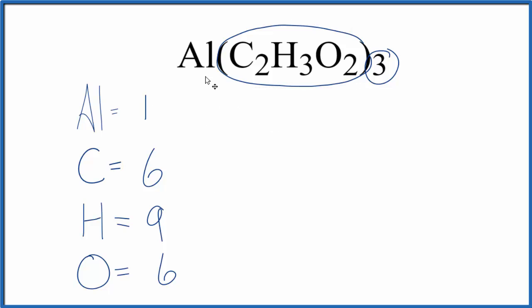So if we want to know the total number of atoms in aluminum acetate, we'll just add all of these up. One plus six is seven, plus nine, that's 16, plus six, 22 total atoms for aluminum acetate.